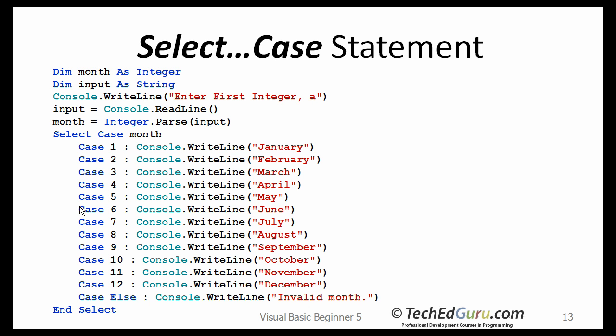Another way to make decisions in your applications, in your visual basic applications, is by using the select case statement. Let's first go through how this works and then we will compare the if statement and the select case statement. So, in this case, your program is going to ask the user to enter an integer, hopefully between 1 and 12. You read that one as the variable month, which is an integer type.